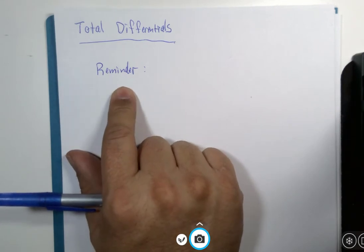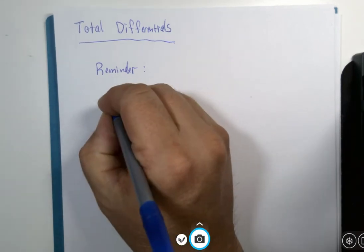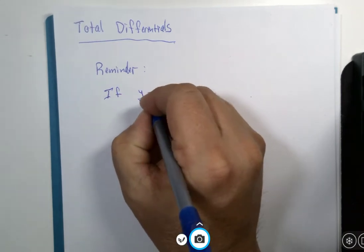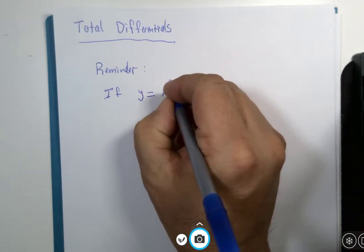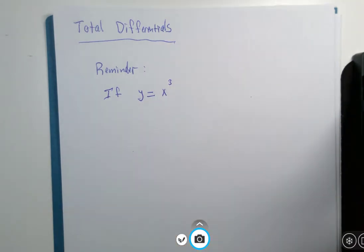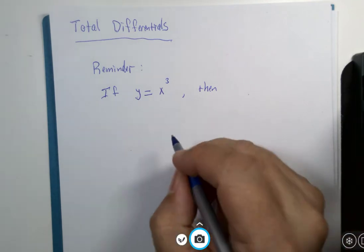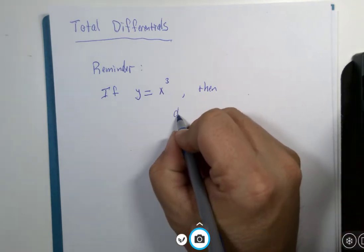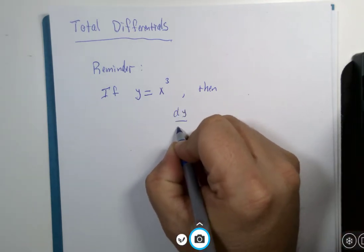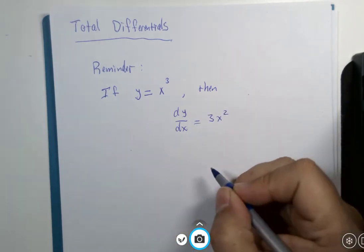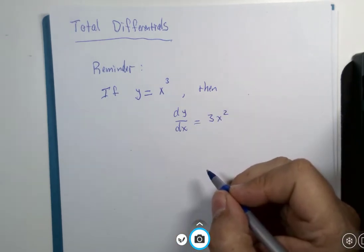So as a reminder, if we have a function y equals x cubed, we learned that the derivative called dy dx was 3x squared through something called the power rule of derivatives.